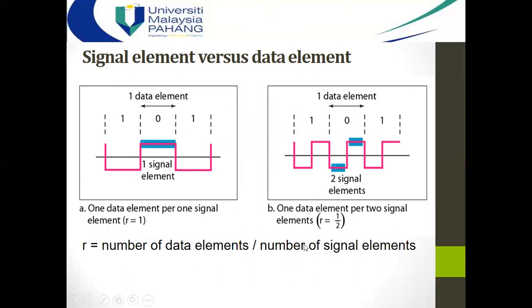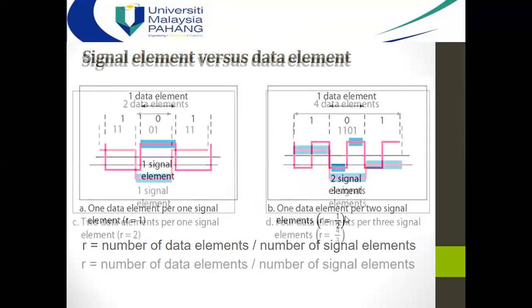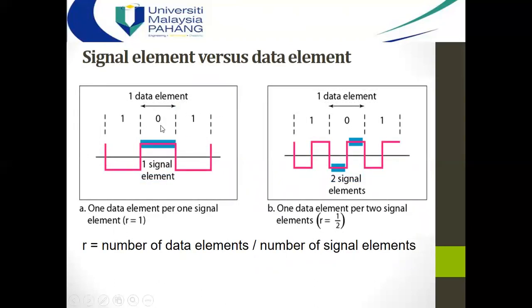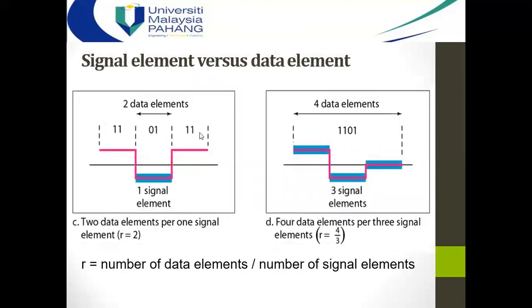The signal rate, sometimes known as the modulation rate, is how many signal elements or symbols can be transmitted per unit time. Now let us look more closely. For binary bits data, one bit corresponds to one waveform — one bit, one signal element. There is a term r, which is the number of data elements divided by the number of signal elements. In this case r equals one. But for another case, one data bit may correspond to two waveforms or two signal elements, giving r = 1/2.